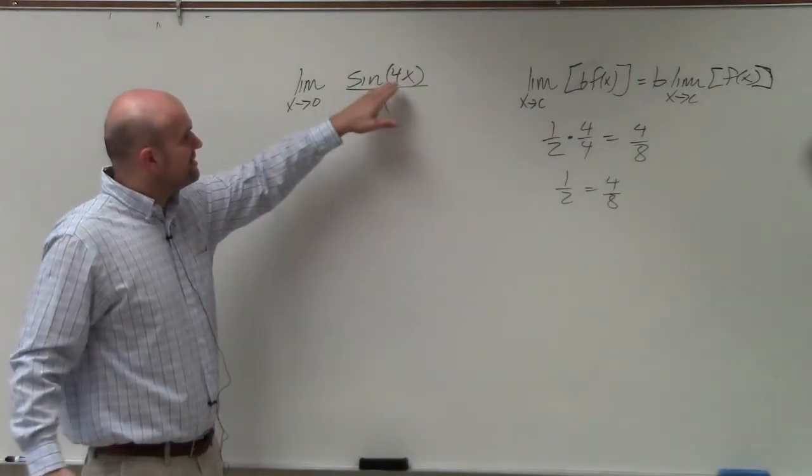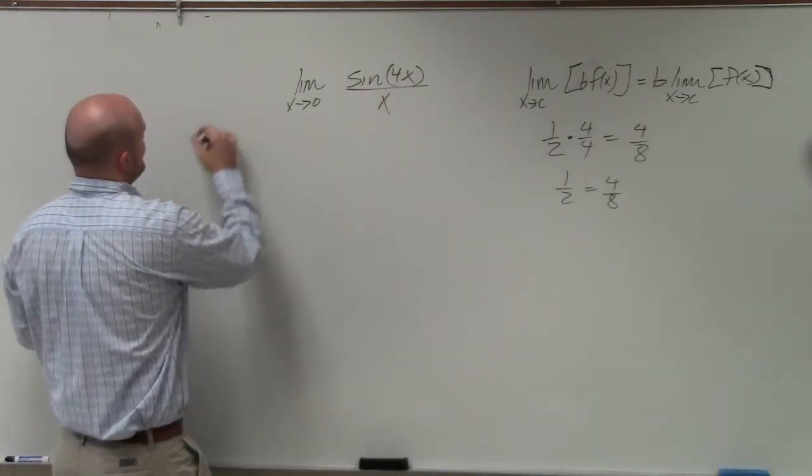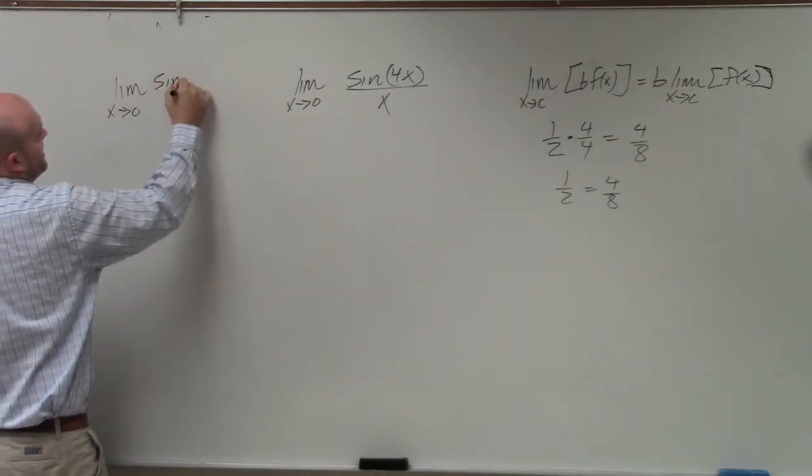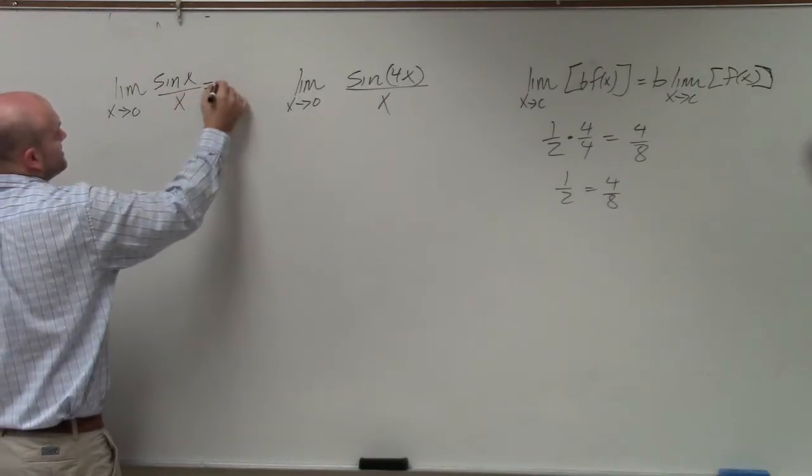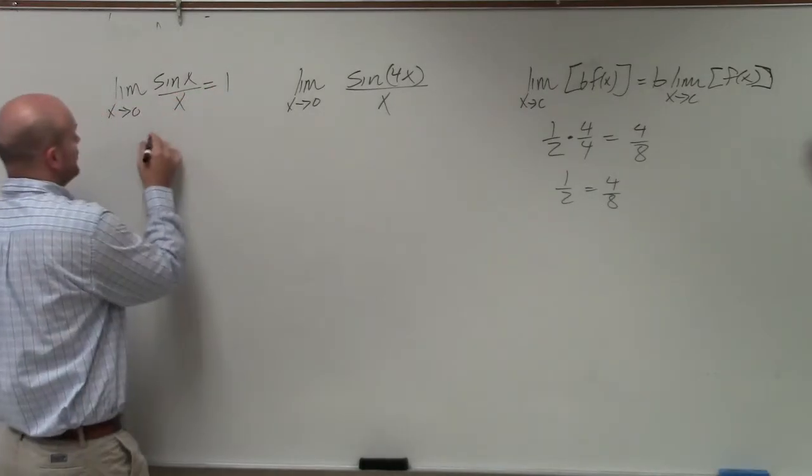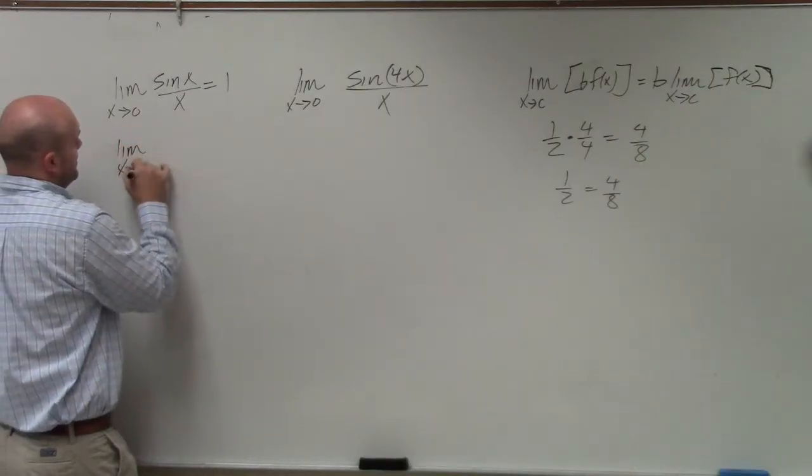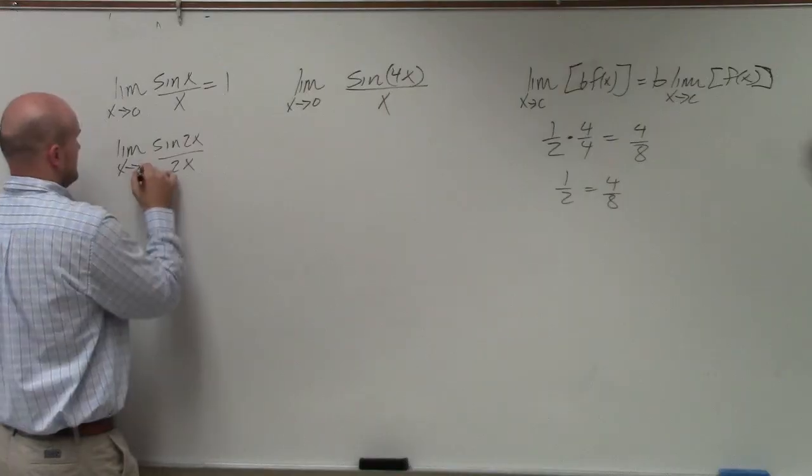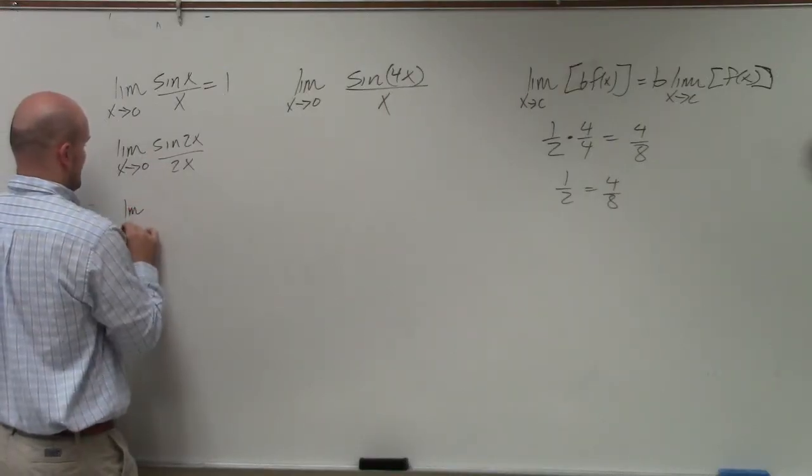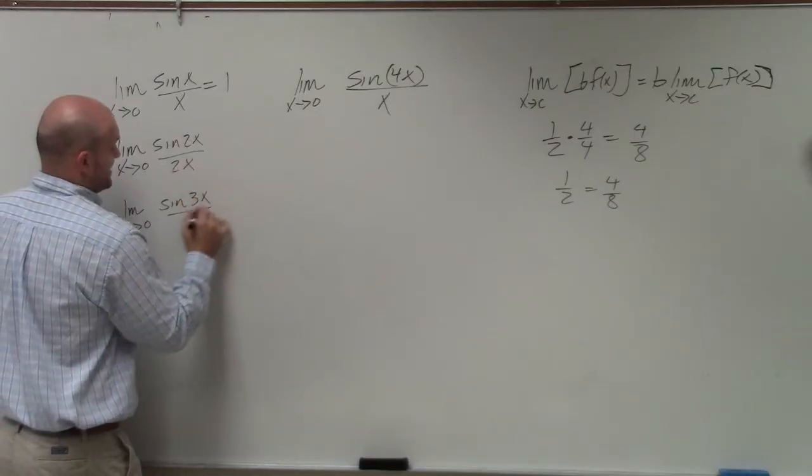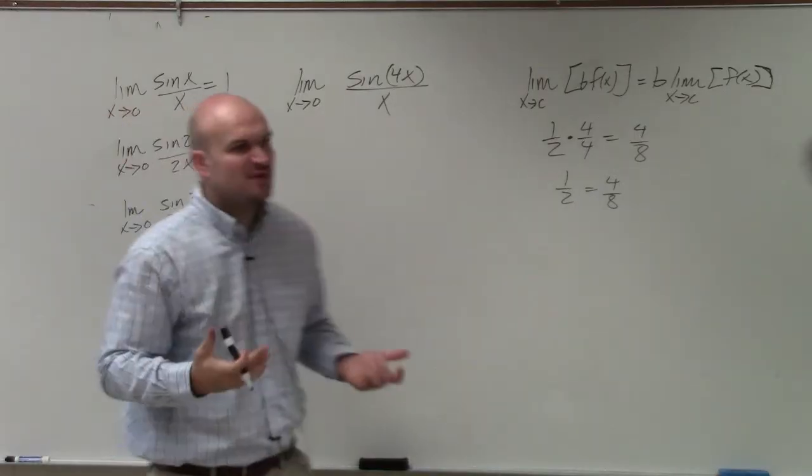Now, the only rule that we have is that the limit as x approaches 0 of sine of x over x is equal to 1. Well, guess what? But that rule works for x approaches sine of 2x over 2x, limit as x approaches 0 sine of 3x over 3x. It works for all. It doesn't matter.